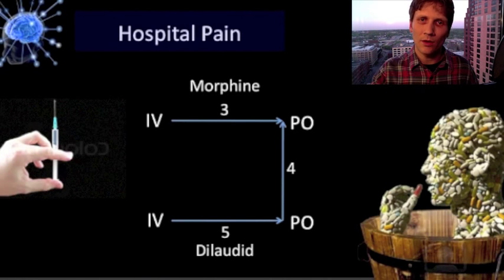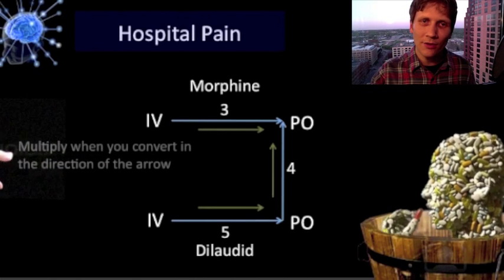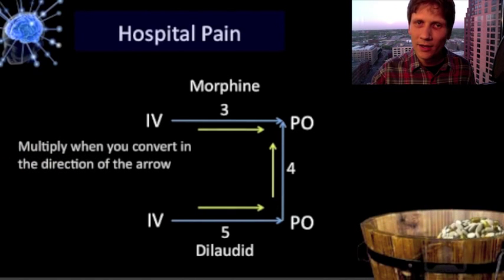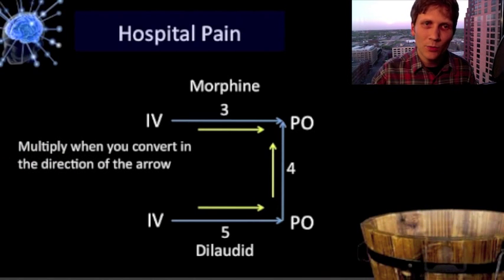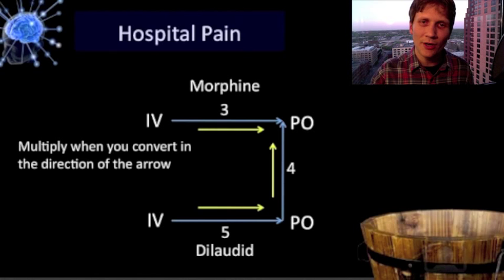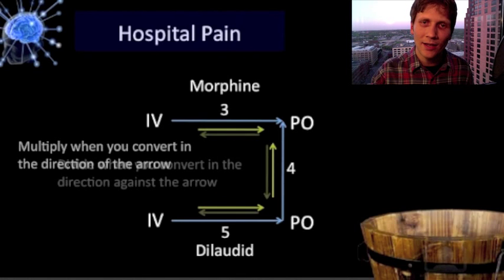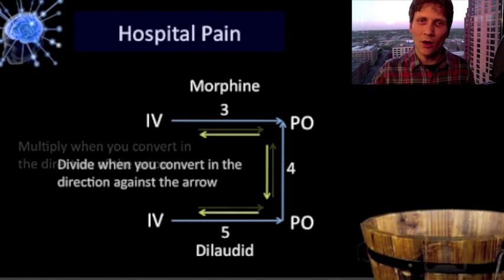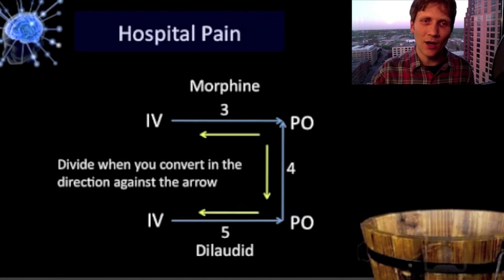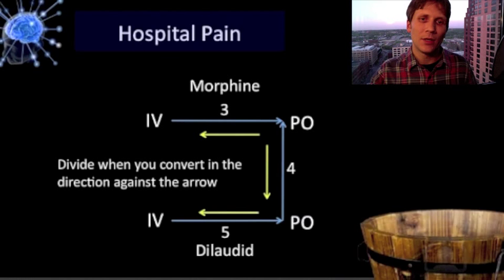The directionality of the arrows is the other important thing. When you go with the arrows you're going to multiply, and when you go against the arrows you have to divide. But this is really all you need to know.